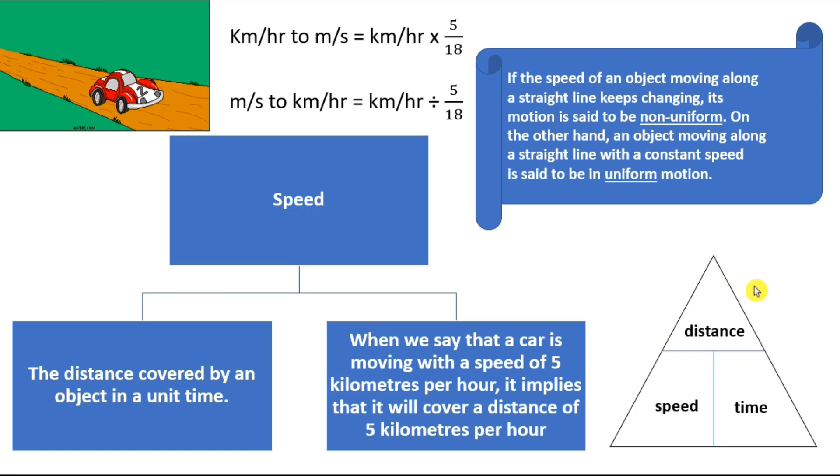Coming to the triangle at the bottom right of the screen, this will help you calculate the distance if the speed and time is given. It will help you calculate the speed if the distance and time is given. And the same thing for the time. If I want to find the speed of an object, I will cover it with my hand. It is implying that the speed is distance by time. The sleeping line is division, the standing line is multiplication.